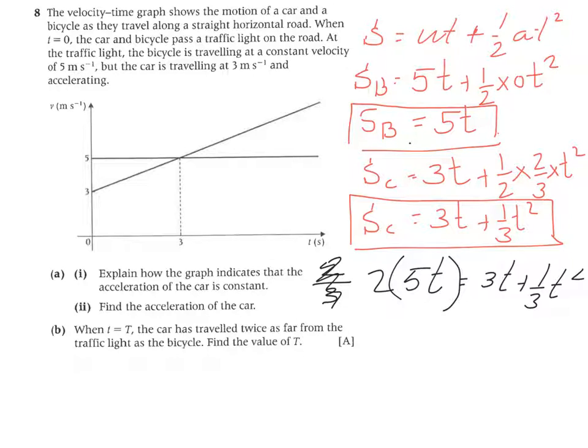So 10T equals 3T plus a third T squared. It is a quadratic equation. You are going to equal that to 0. Let me do that for you. So 0 equals. If you did it properly you are going to get T squared minus 21T. I am just skipping one or two steps. But you make sure you are going to get that.